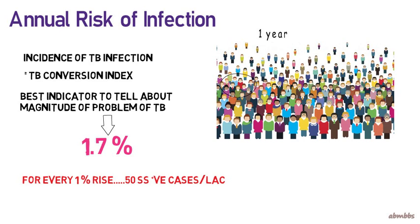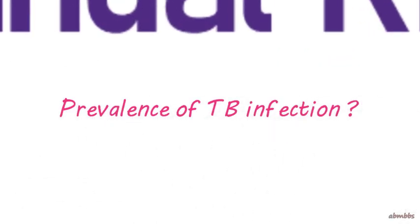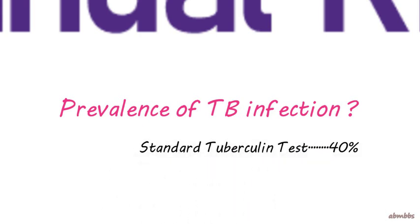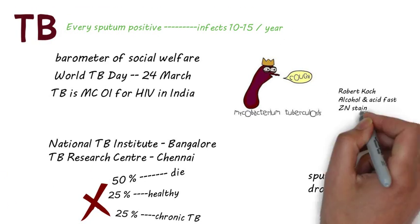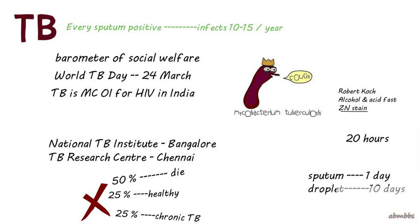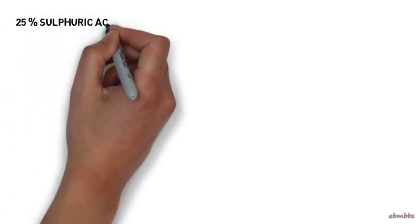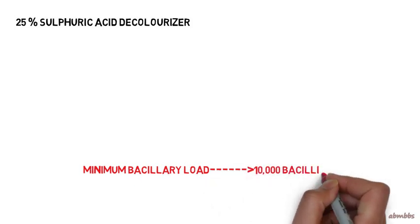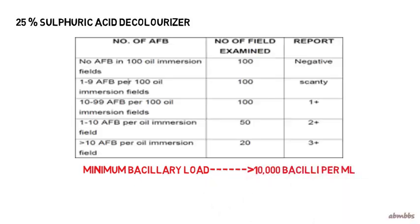What about the prevalence of TB infection in India? You measure that by the standard tuberculin test and the prevalence in India is 40%. Regarding the staining properties of TB bacillus, TB is stained by Ziehl-Neelsen stain and 25% sulphuric acid is used as decolorizer. The minimum bacillus load needed for a TB positive result is 10,000 bacilli per ml of sputum. This is the standard examination protocol for TB.